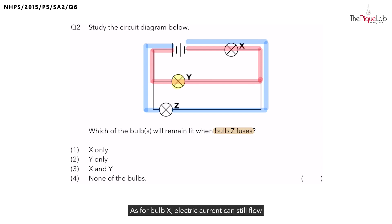As for bulb X, electric current can still flow through the red circuit which bulb X is on, so bulb X can still light up.